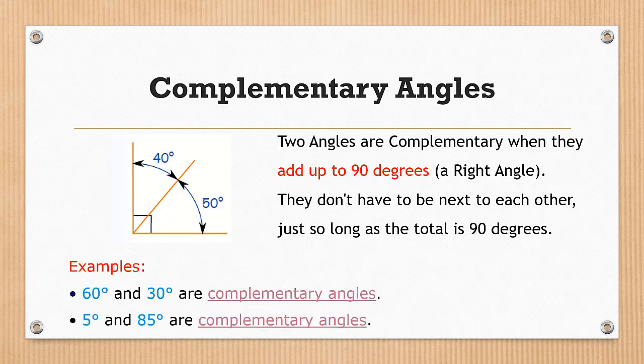For example, 60 degrees and 30 degrees are complementary angles. 5 degrees and 85 degrees are complementary angles.